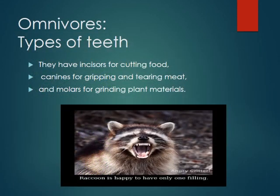Types of teeth omnivores have: Omnivores eat both plants and animals, so they need different types of teeth — each kind is designed to eat and break up different types of food. They have incisors for cutting food, canines for gripping and tearing meat, and molars for grinding plant materials.